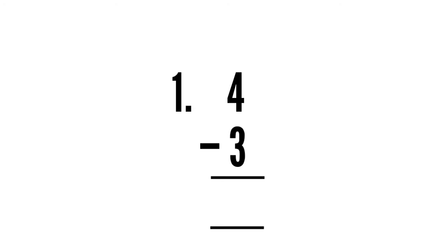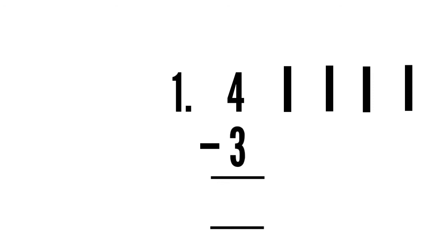Which one is the bigger number here? Four is the bigger number. Now you have to draw vertical lines equal to the bigger number. How many lines do you have to draw? Yes, four lines: one, two, three, four. Now we have to cross out lines equal to the smaller number. Three is the smaller number. We have to cut three lines: one, two, three.